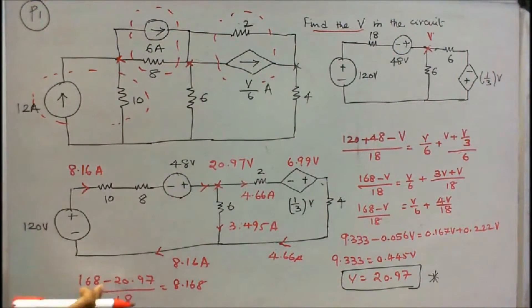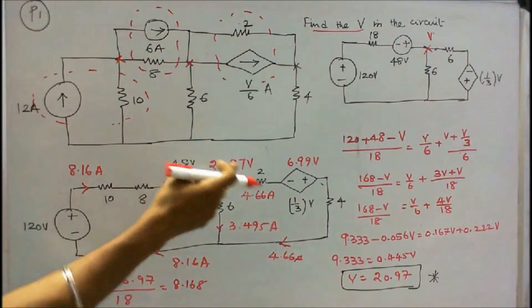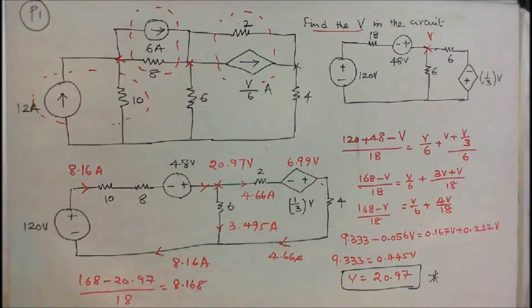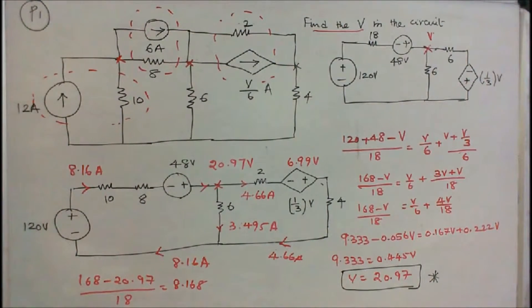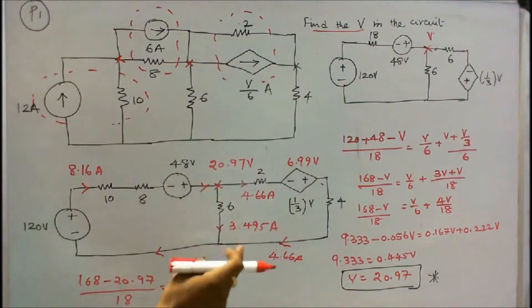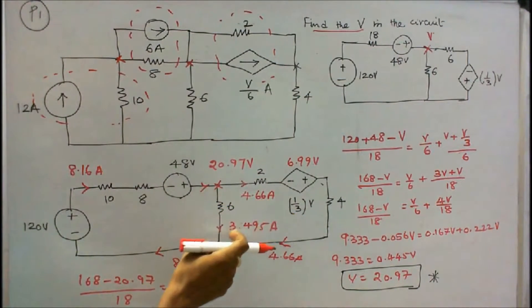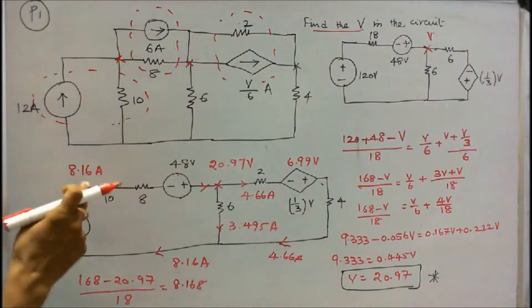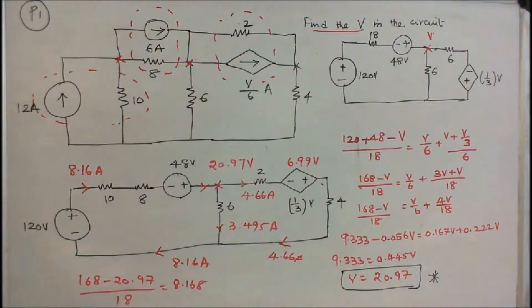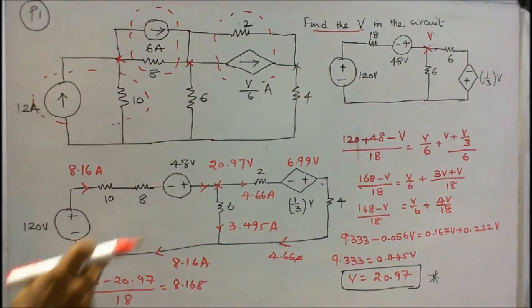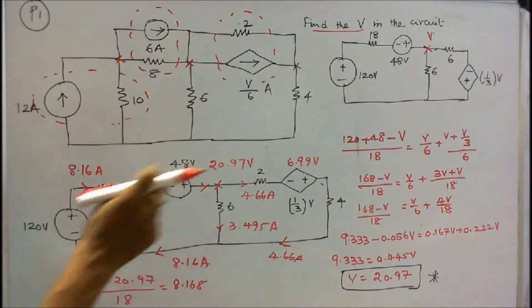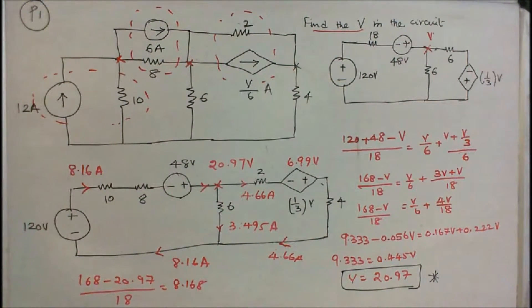Here, 168 minus 20.97 divided by 18 is equal to 8.168. So current entering the junction is 8.16. Current leaving the junction: that is 4.66 plus 3.495, that is equal to 8.16. Kirchhoff's current law is verified. V is equal to 20.97 volts.